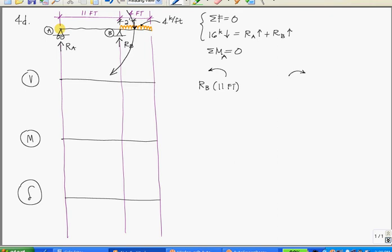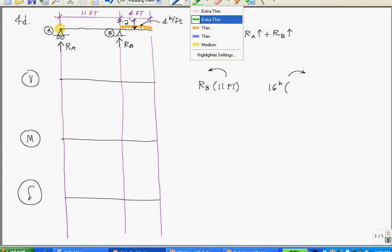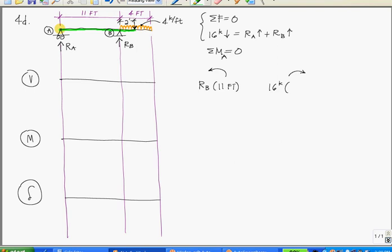Now let's take into account the 4 kips per foot times 4 feet, which is a 16 kip load. And we have to consider that the resultant of that load occurs right in the center of it. In other words, at 2 feet from point B. We can also see that relative to point A, that resultant force causes a clockwise moment. So let's tabulate it over here. Again, our force 4 kips per foot times 4 feet equals 16 kips. The distance between this resultant and point A is 11 feet plus 2, 13 feet.